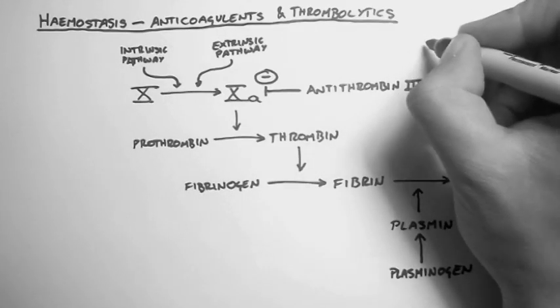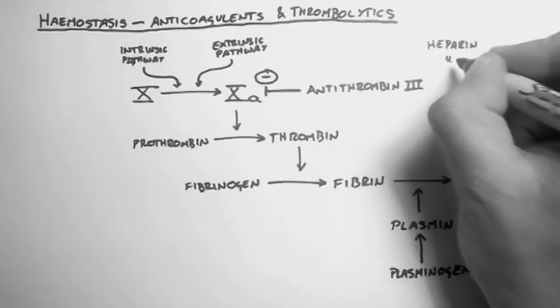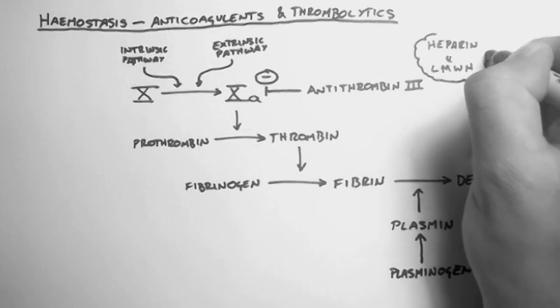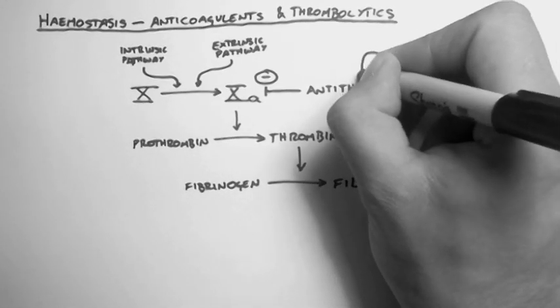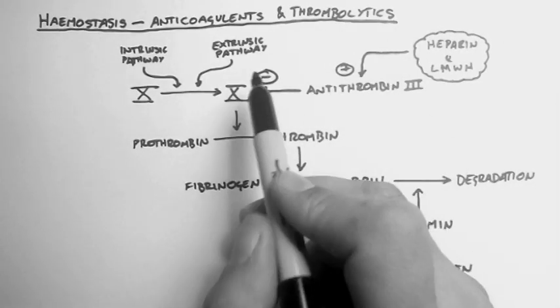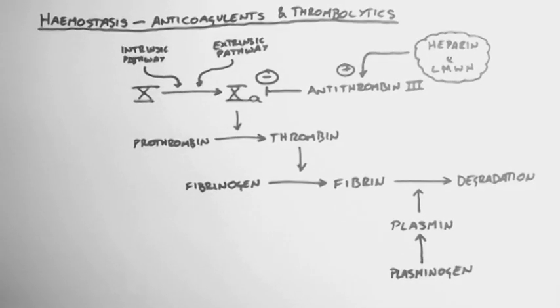So a couple of very commonly used drugs are heparin, or its cousin low molecular weight heparin, or LMWH for short. And these two drugs are activators of antithrombin 3, thereby inhibiting factor Xa and stopping the coagulation cascade.